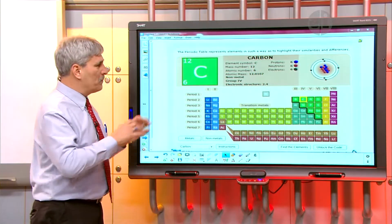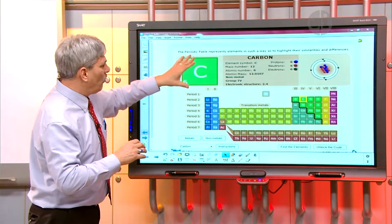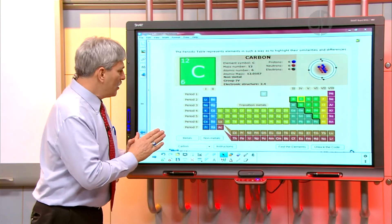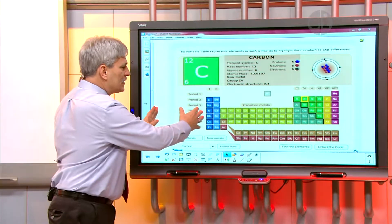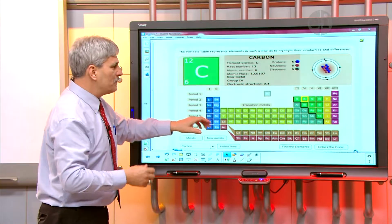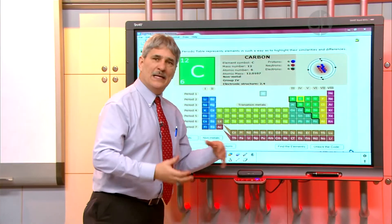If we look at this whole periodic table, we see there's a little staircase here, and that kind of divides the atoms on this side, the elements on this side that tend to lose electrons—these are the metals—from the ones on the other side that tend to gain electrons. Those are the non-metals.